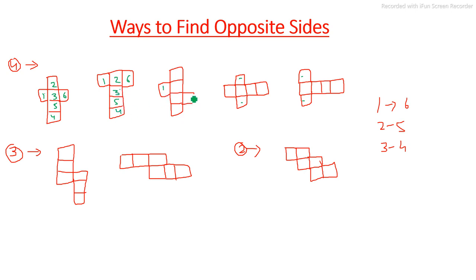This same rule applies in similar arrangements of four boxes in a row: one is opposite to six, two is opposite to five, and three is opposite to four. In all such cases, the alternating boxes are always the opposite faces.